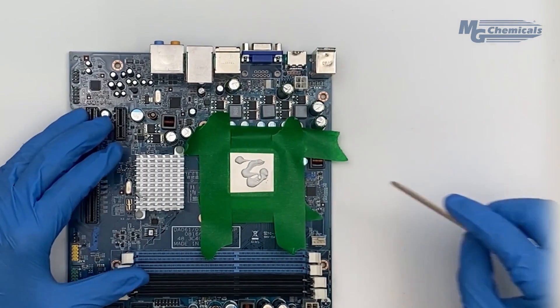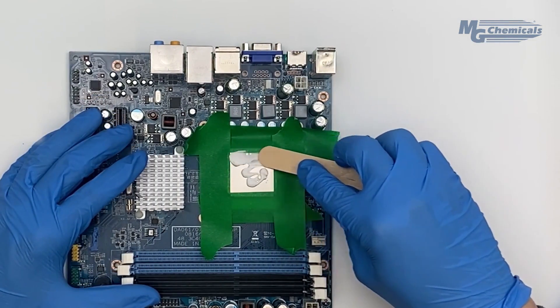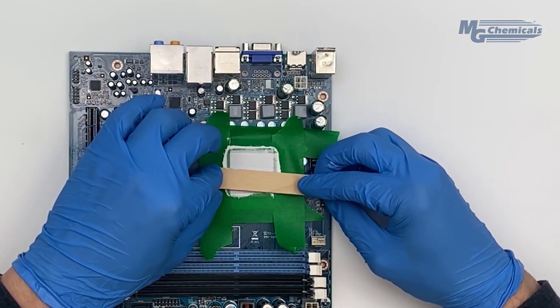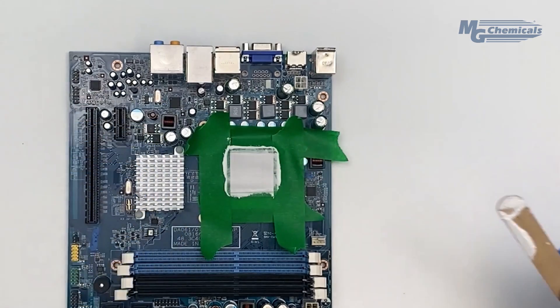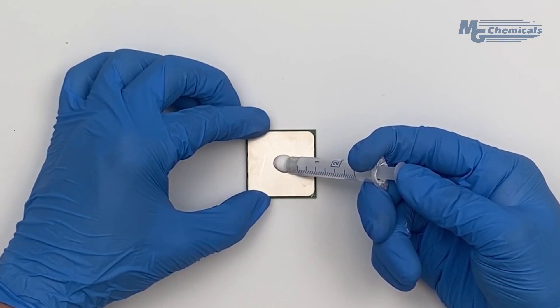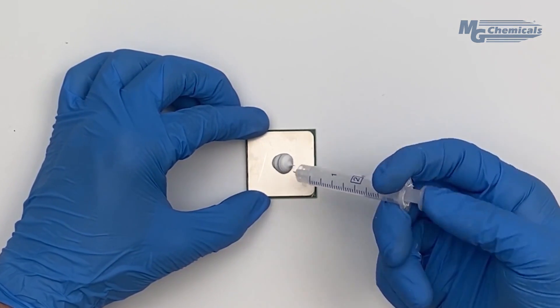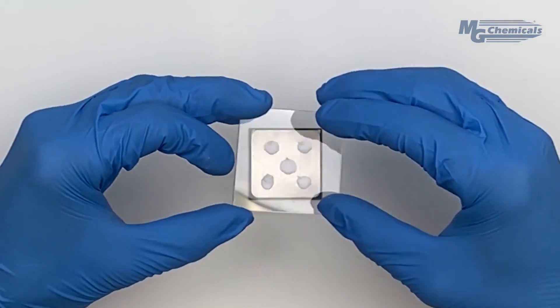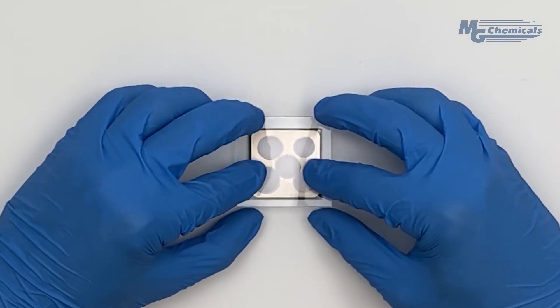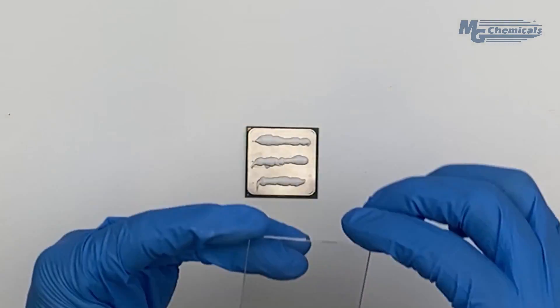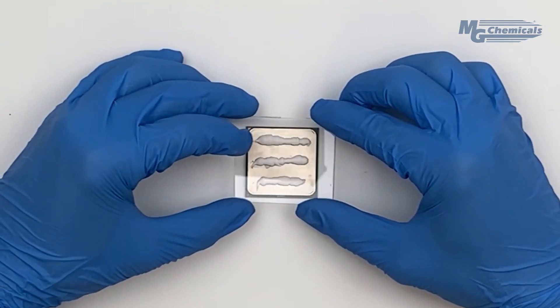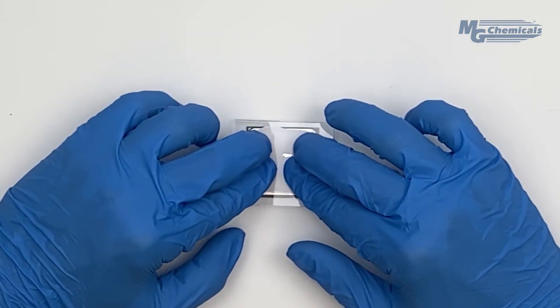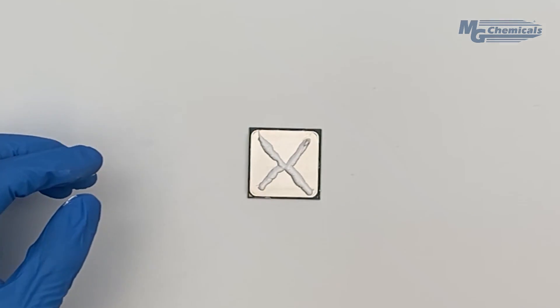The DIY community employs various techniques when applying thermal paste to heat sinks: troweling with a tongue depressor, a large dot in the center, spreading five small dots around the surface, parallel lines, and finally a criss-cross or X pattern.